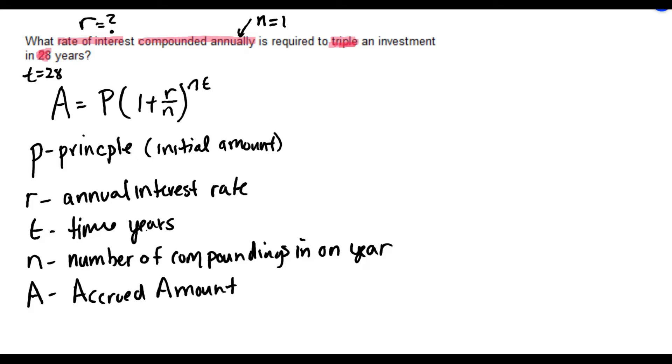So because we're trying to triple the investment, A will be equal to 3 times P. Triple the principal is what we're trying to achieve.